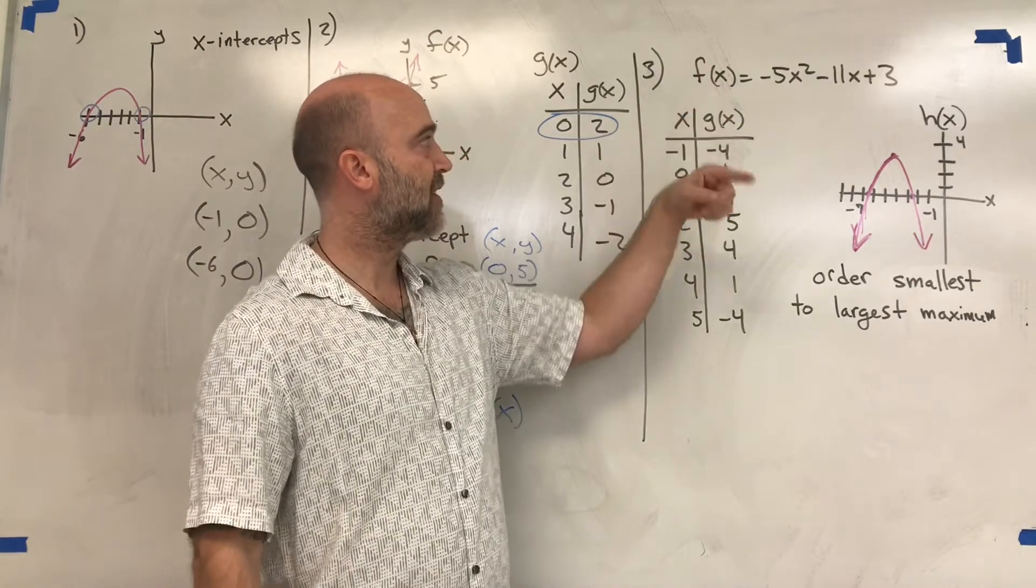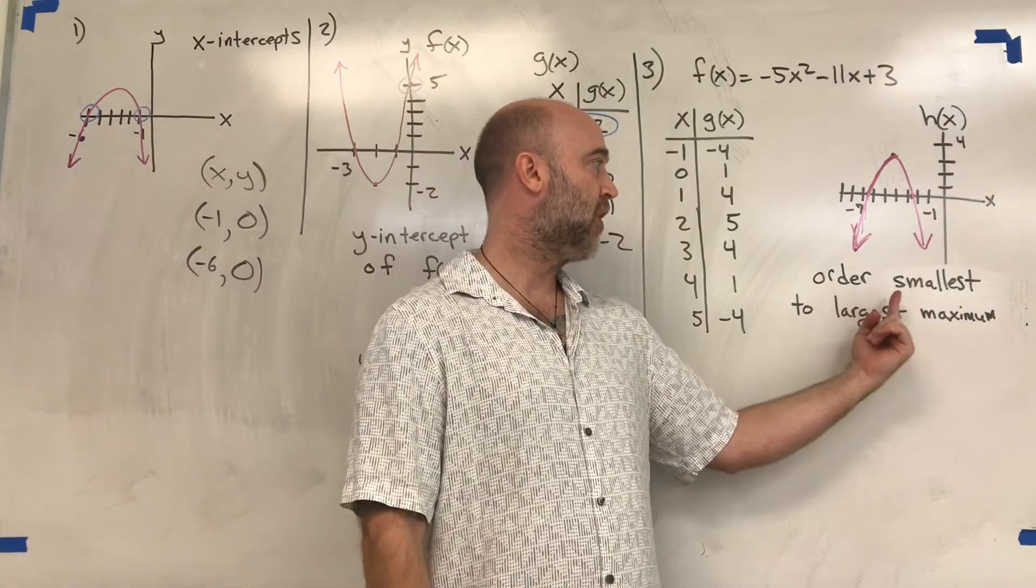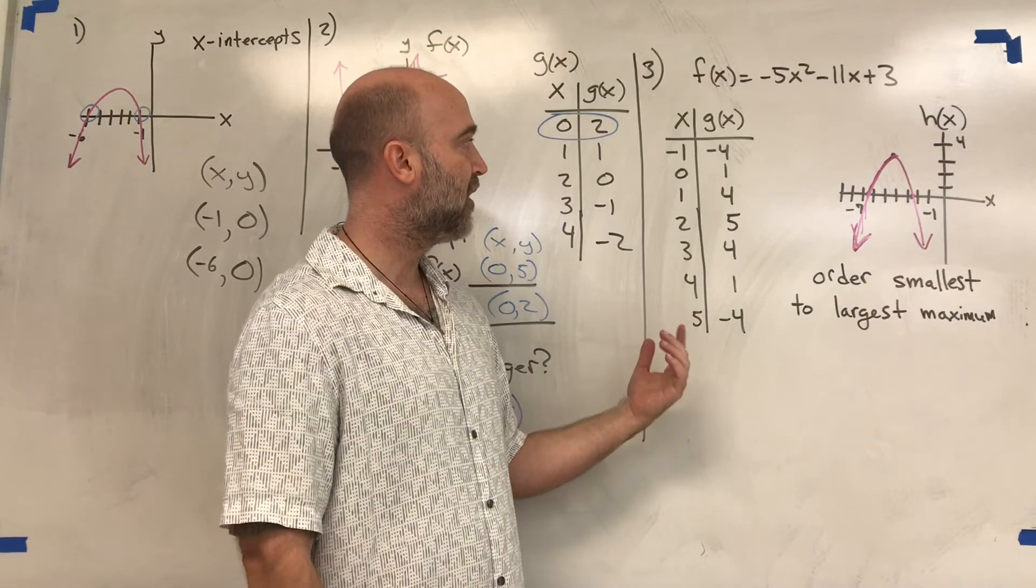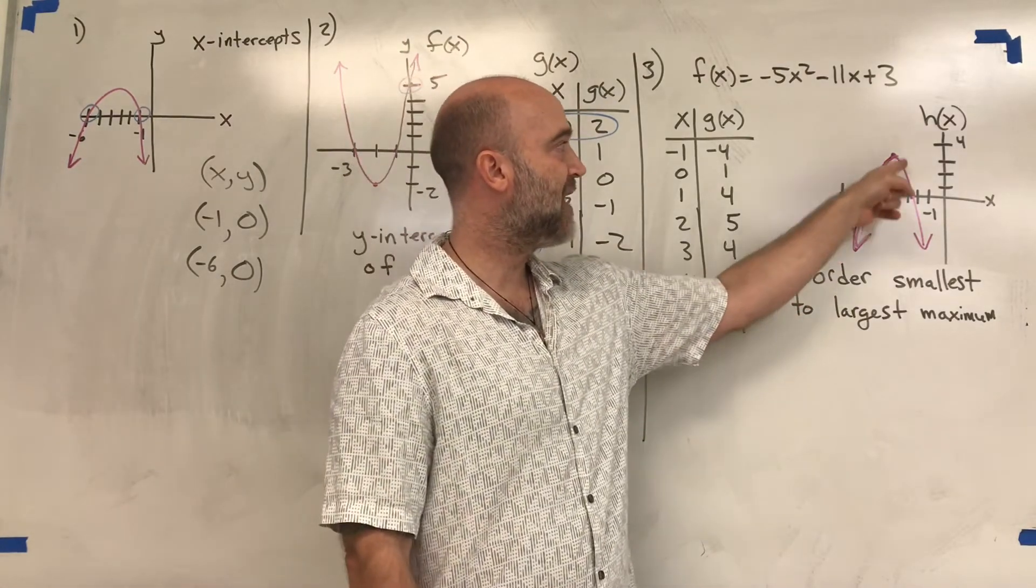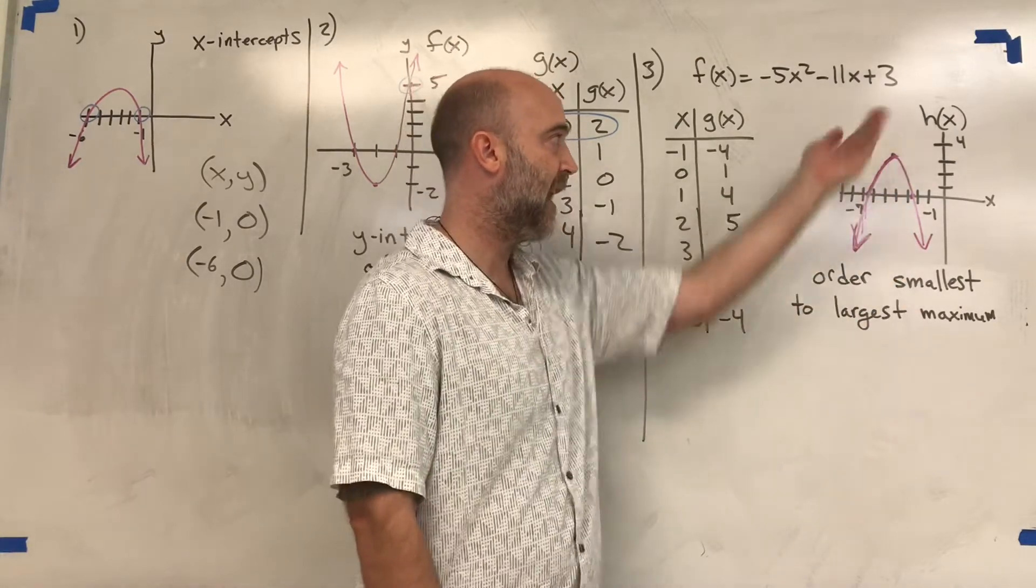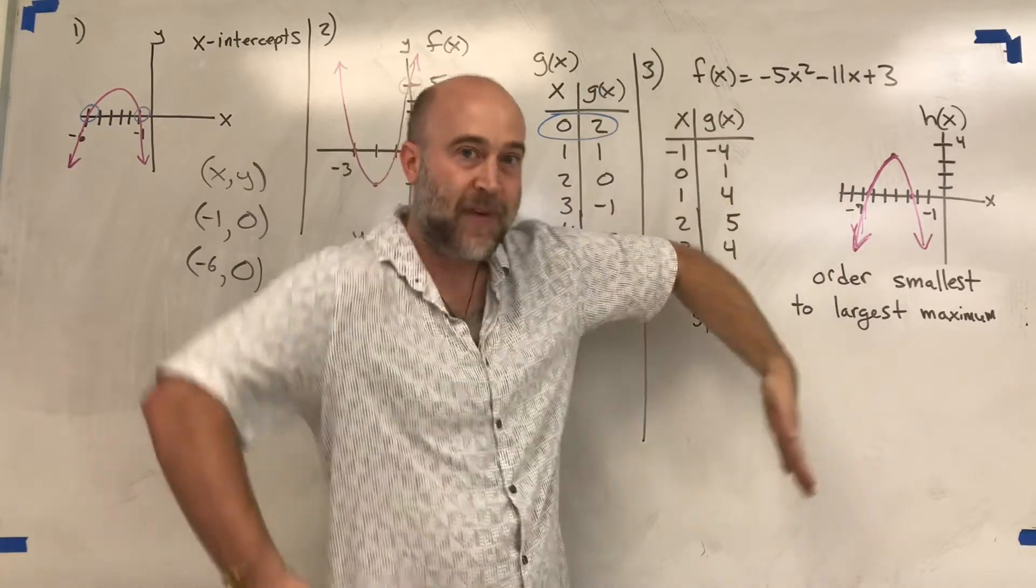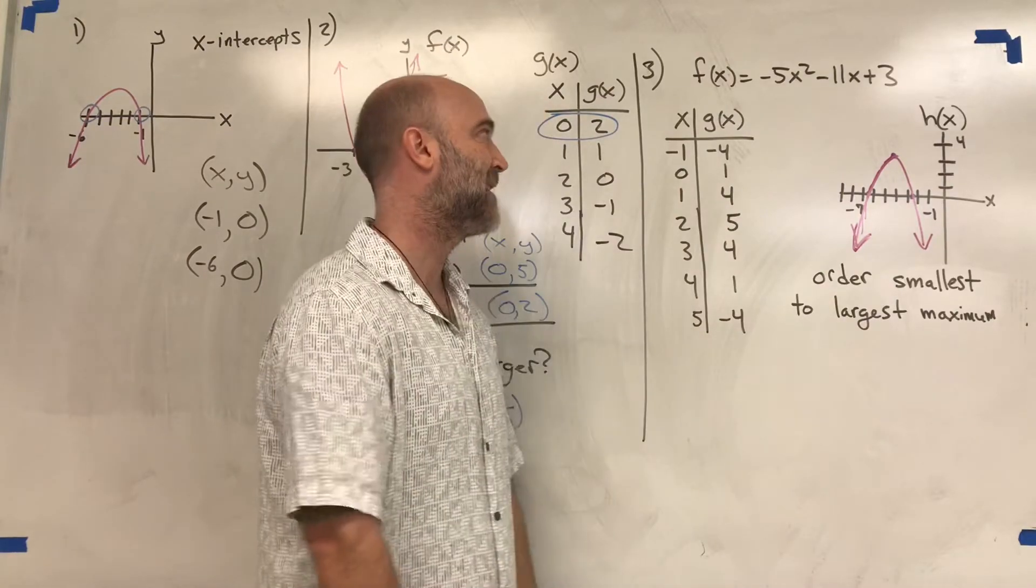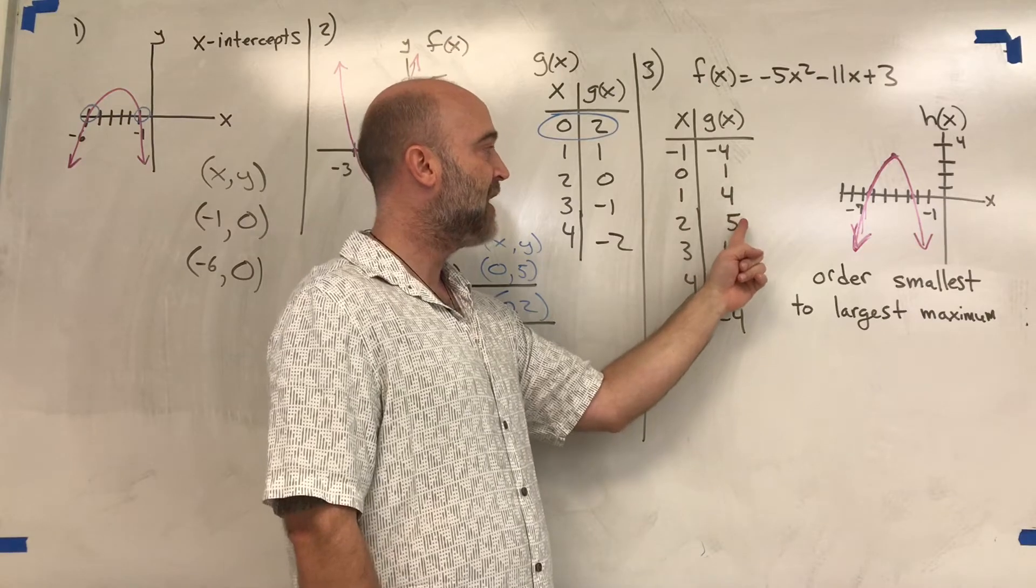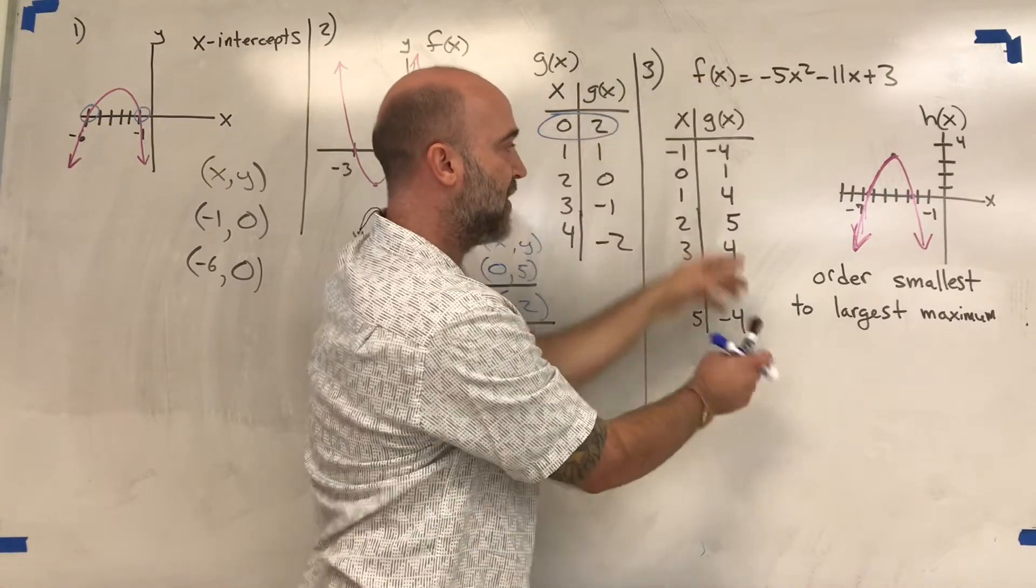Our last problem: we have three functions f(x), g(x), and h(x). We're asked to order smallest to largest maximum. This is a maximum—it has a point taller than all the other points. This one has a negative in front of the x², so it's a parabola facing down with a maximum. On this one we're looking at the outputs, and there's a 5 with symmetry off of that 5, so it's a parabola peaking at 5.